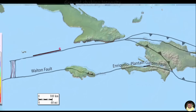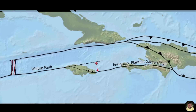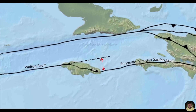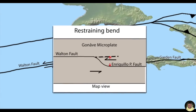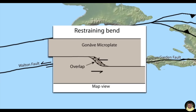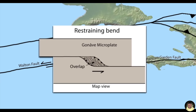Notice the offset between the Plantain Garden fault in southeast Jamaica and the Walton fault in northwest Jamaica. This is a restraining bend in the left-lateral strike-slip fault system along the southern edge of the Gonâve Microplate. As the left-lateral strike-slip motion progresses, an overlap or collision between the blocks develops in the bend, which becomes a zone of thrust and strike-slip faulting between the crustal blocks.